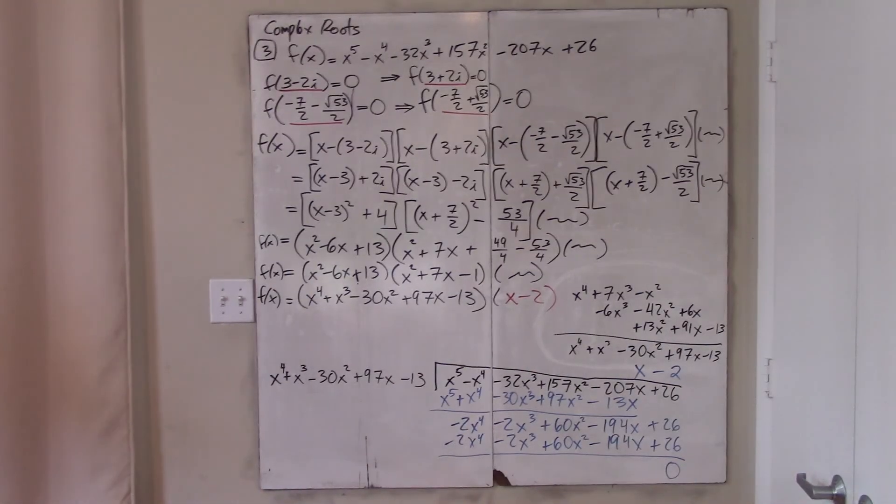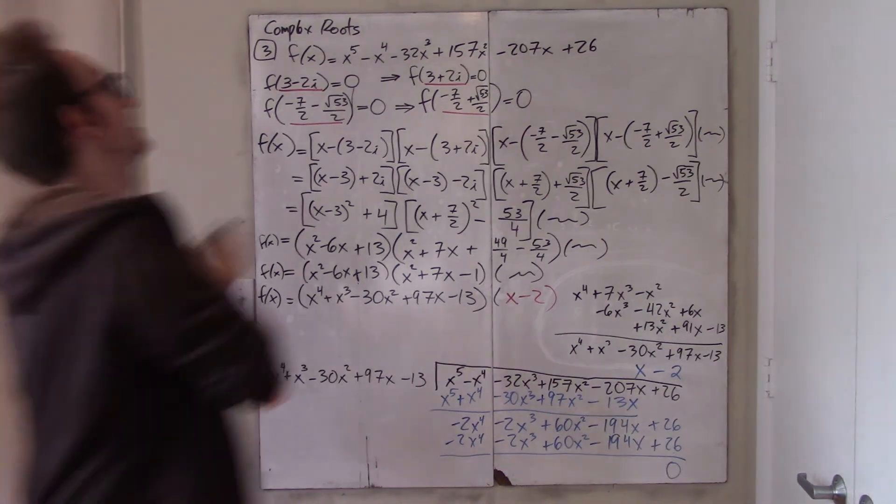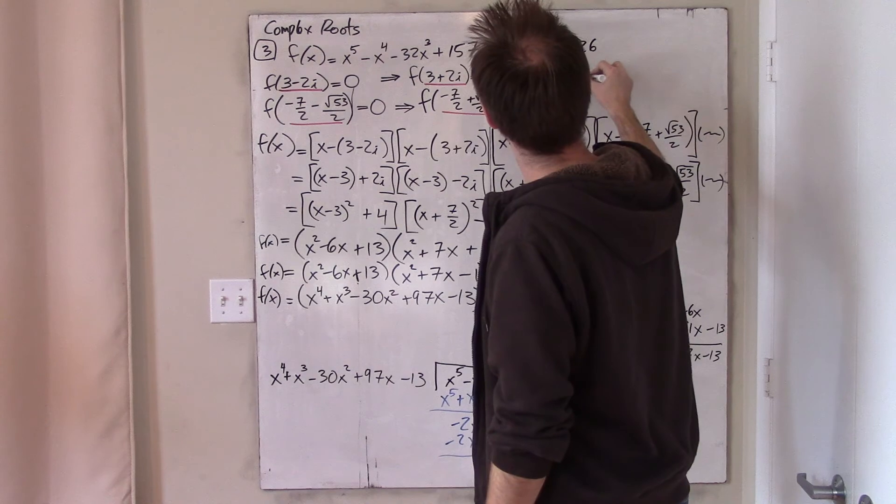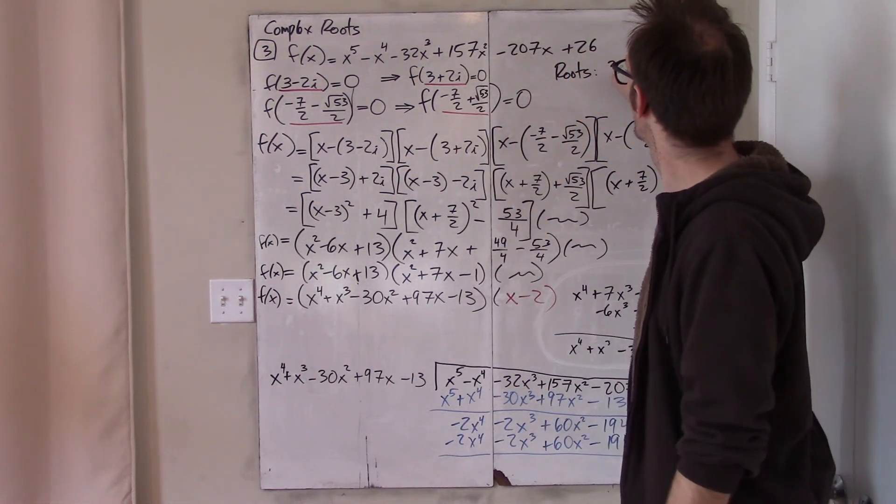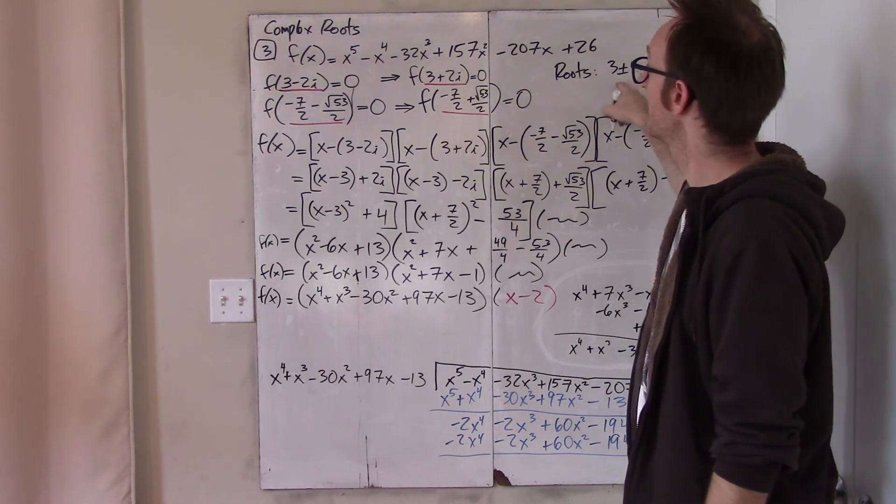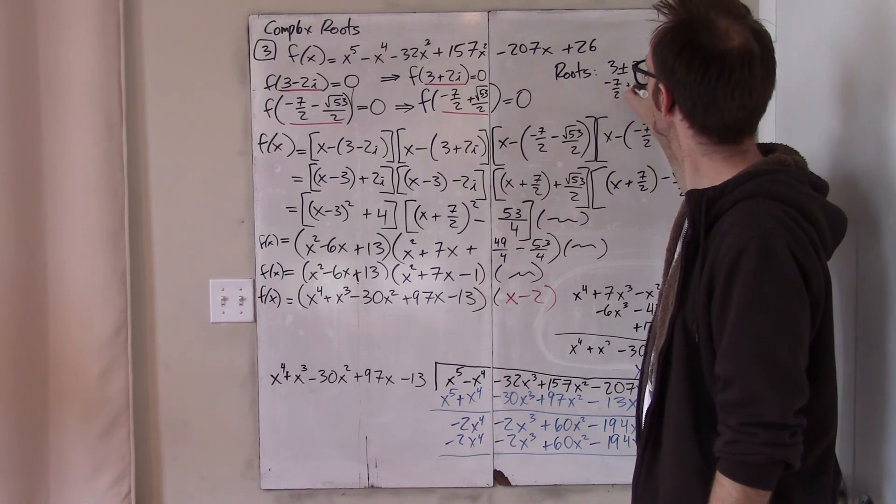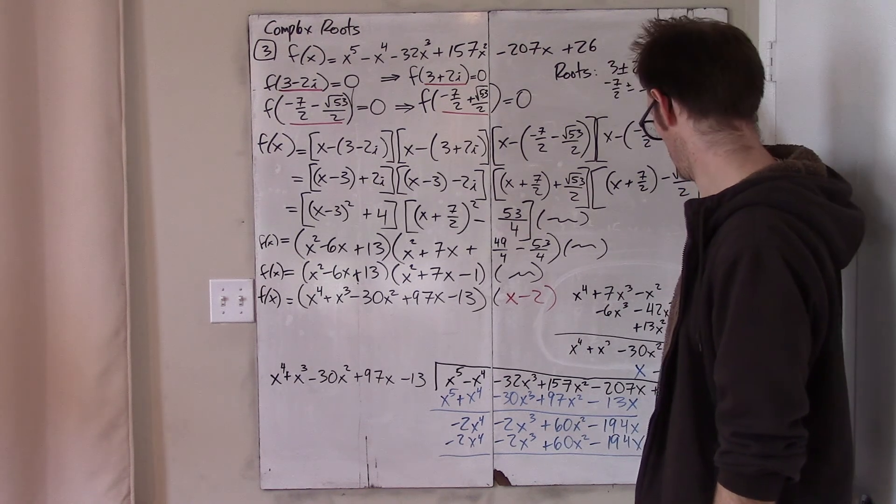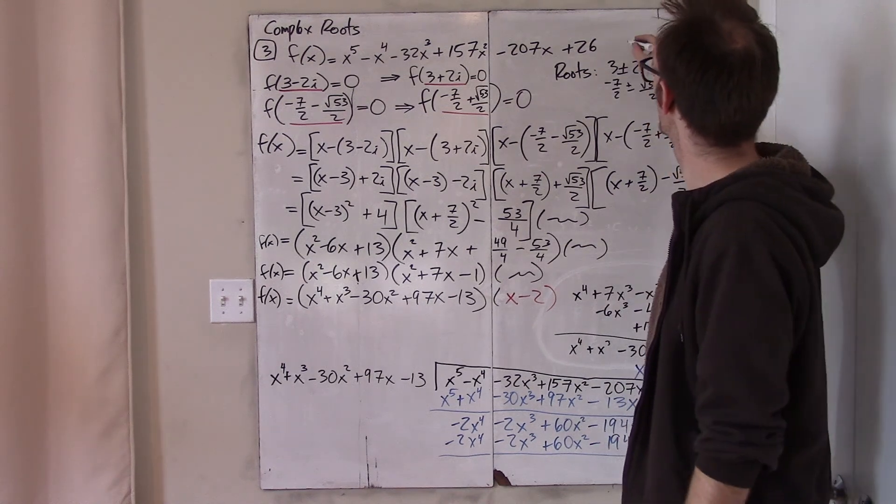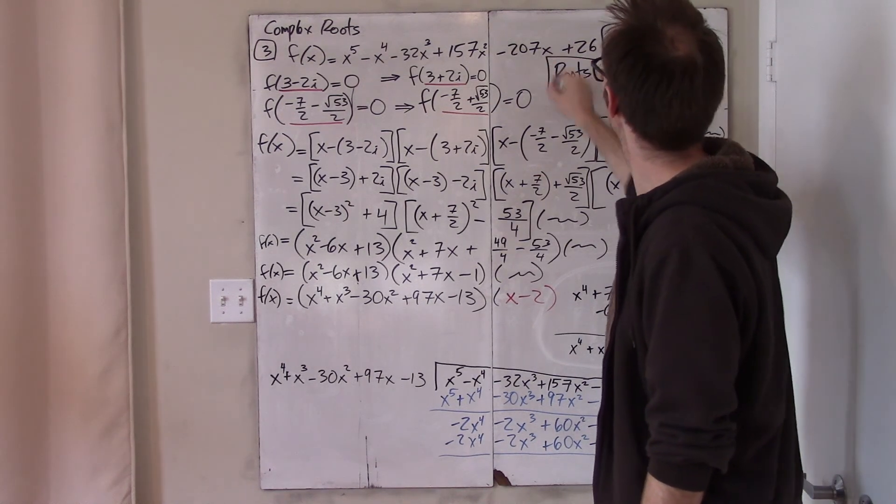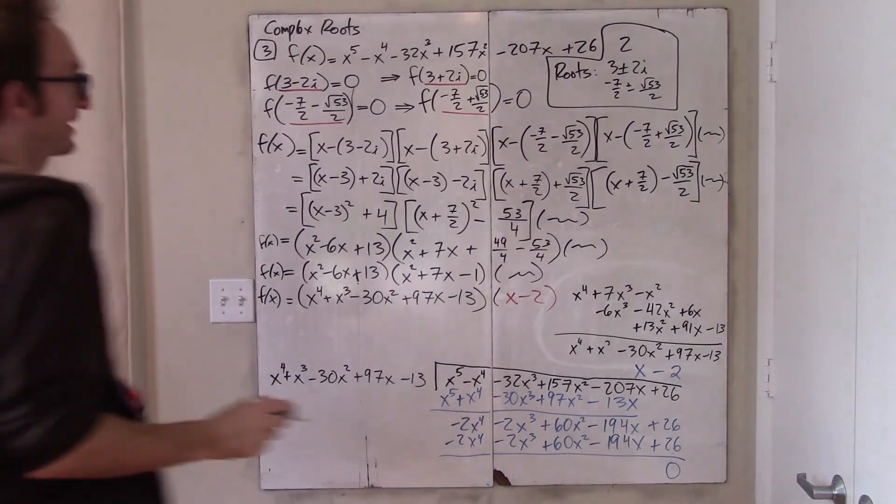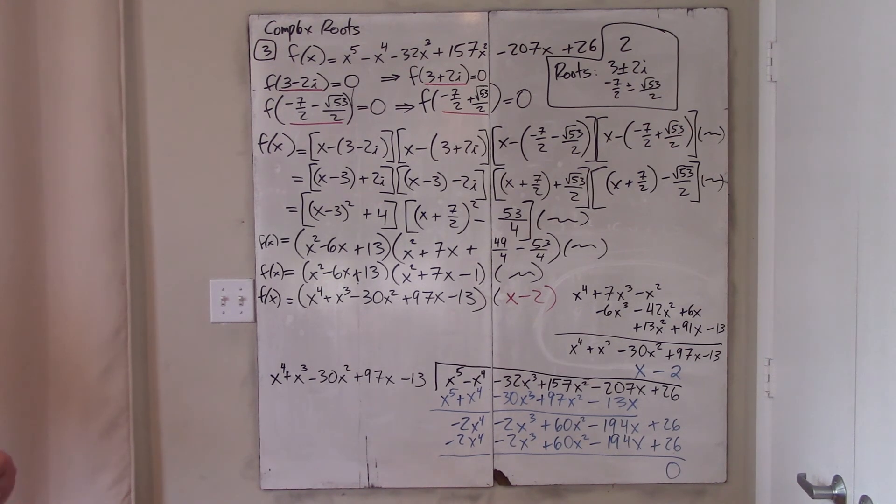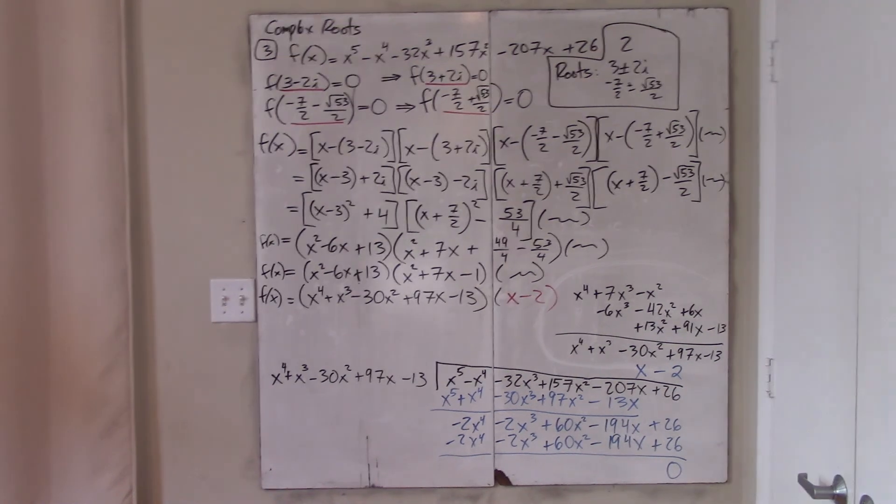And so, the fifth root, so what are the roots? They are 3 plus or minus 2i. They are negative 7 halves, plus or minus root 53 over 2. And they are 2. The last root is 2. This is kind of how I give the final answer. Four of them were given to me. But the fifth one I had to infer, sort of indirectly. Okay. That's it. Good. Bye.